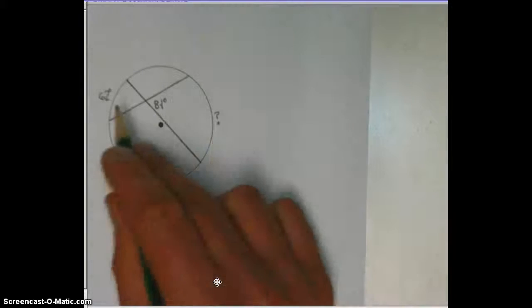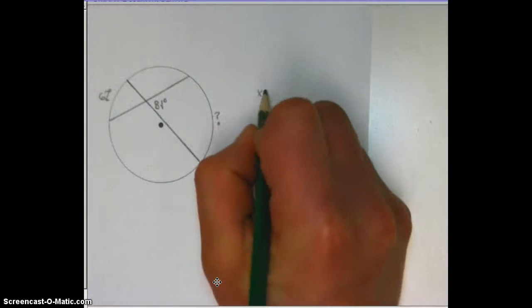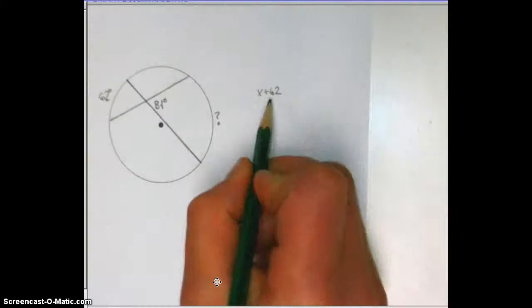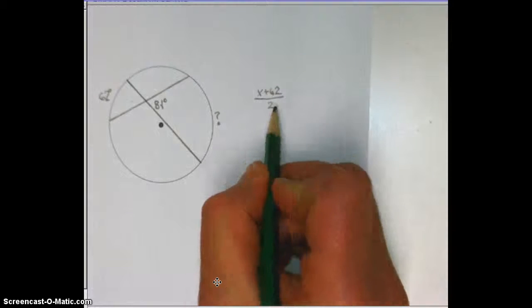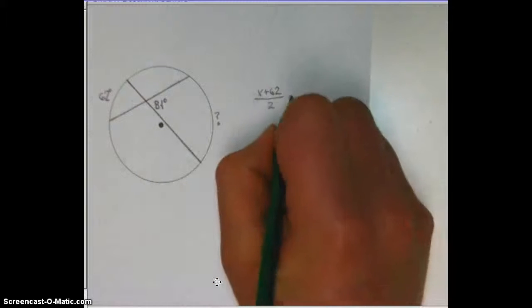We'll take the question mark, which we could call x, and we add that to 62. So, we'll have x plus 62, and then we'll divide that by two. You take the average of the two arcs and divide by two, and that should equal 81.